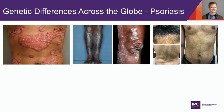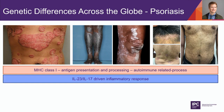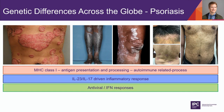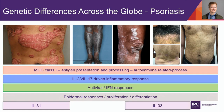Across different groups, the pathways shared across ethnic groups include MHC class I antigen presentation and processing — indicating psoriasis is an autoimmune-related process across all groups — a strong IL-23/IL-17-driven inflammatory response as the key immunological pathway, antiviral and interferon responses, and epidermal responses including proliferation and differentiation. But there are also interesting differences: IL-31 signaling as a risk factor for psoriasis, IL-33 signaling appearing more on the Chinese side, and T-cell/B-cell processes.